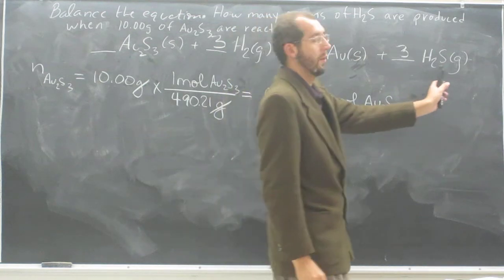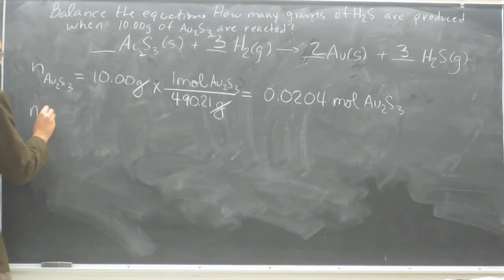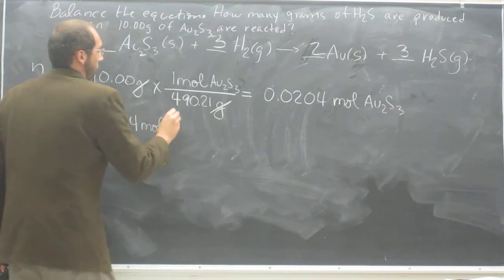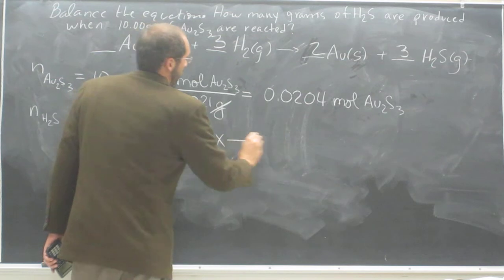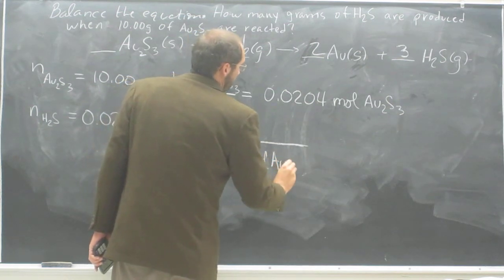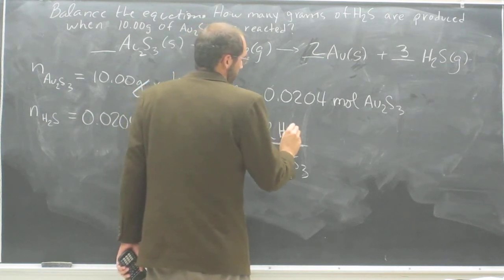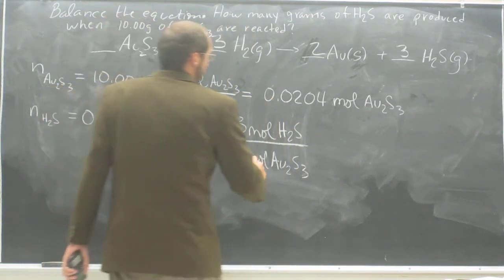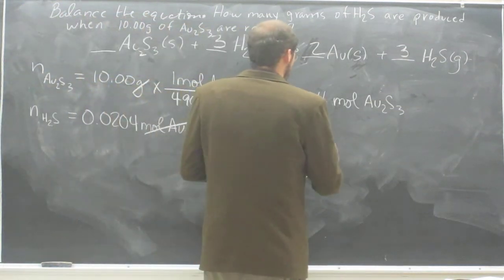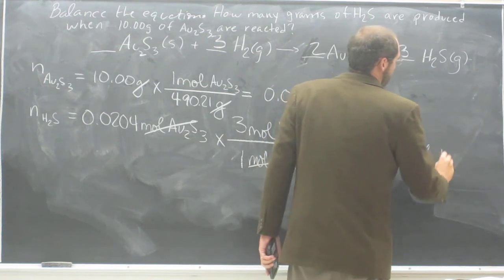So that's the number of moles of this stuff, but we're interested in the number of grams of this stuff. So we need to figure out first the number of moles of that. So what's the number of moles of H2S? Well, we take the number of moles Au2S3, multiply that by, for every one mole Au2S3, there's three moles of H2S. So moles Au2S3 cancel. We'll just take that number and multiply that by three. 0.0612 moles of H2S.